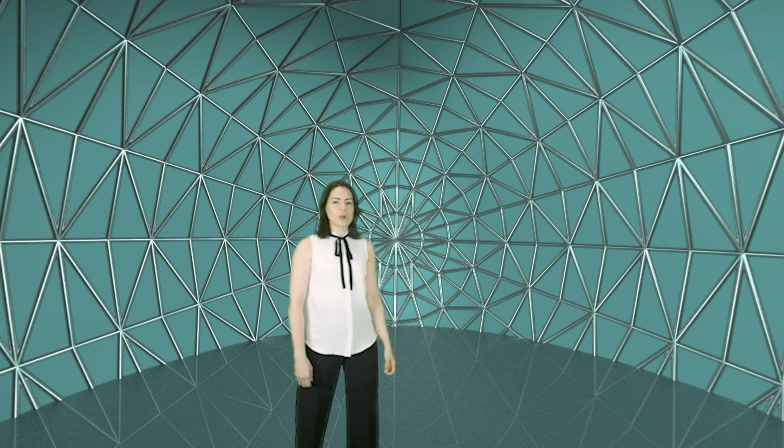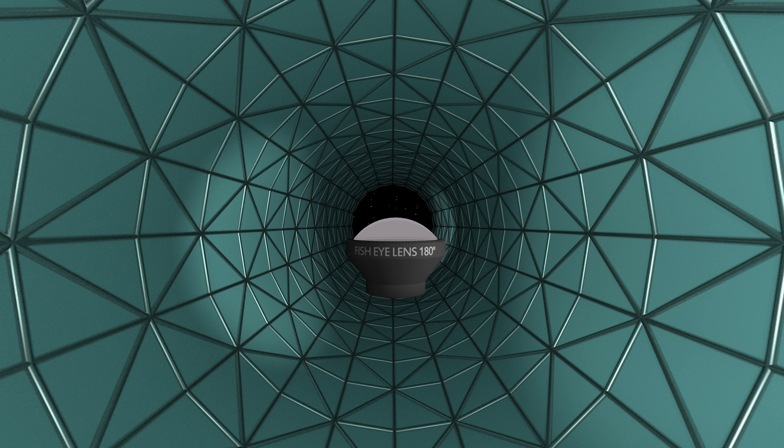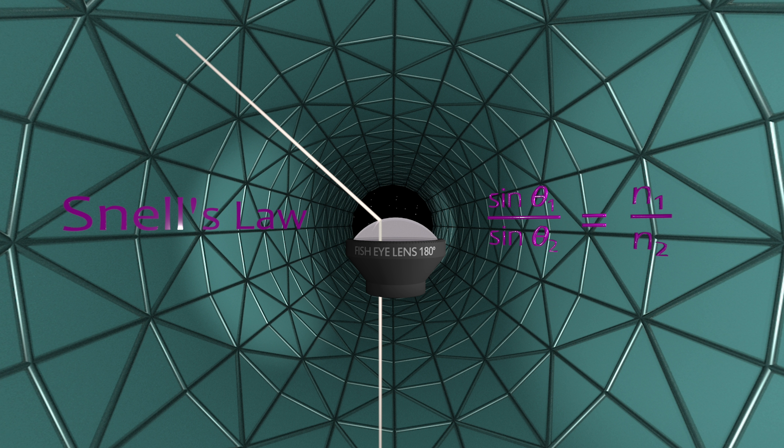If you're going to film a VR180 video, then you need a camera that can record all the light coming in from the hemisphere in front of the camera. How is this done? With optics. When light enters the glass of a camera lens from an angle, it bends. The formula that describes how this happens is called Snell's Law.